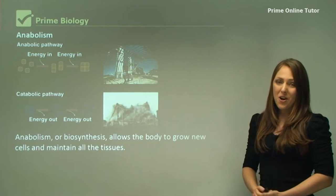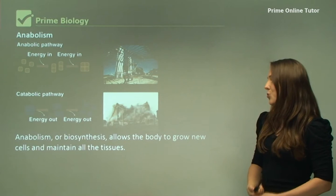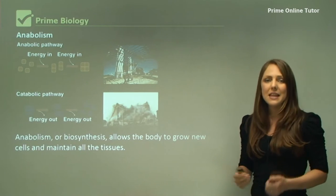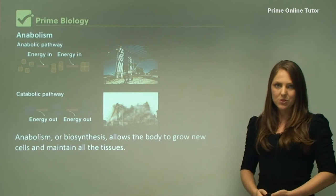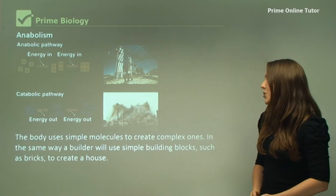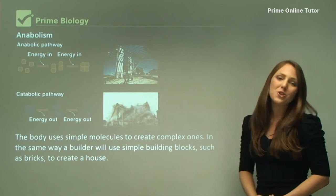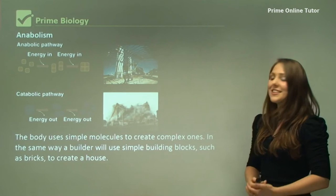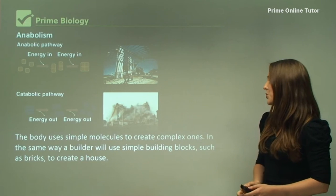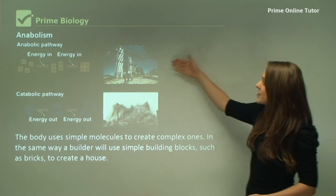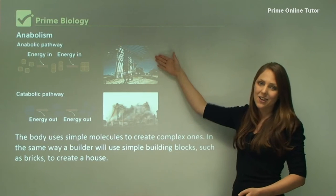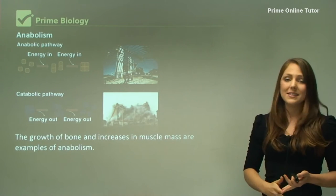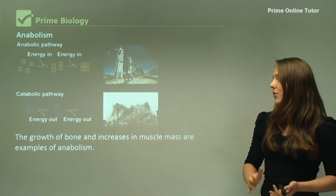Anabolism, or biosynthesis, allows the body to grow new cells and maintain the tissues. Good examples of this include building up muscles in your body. The body uses simple molecules to create complex ones, in the same way a builder will use simple building blocks such as bricks to create a house. The growth of bone and increases in muscle mass are examples of anabolism.